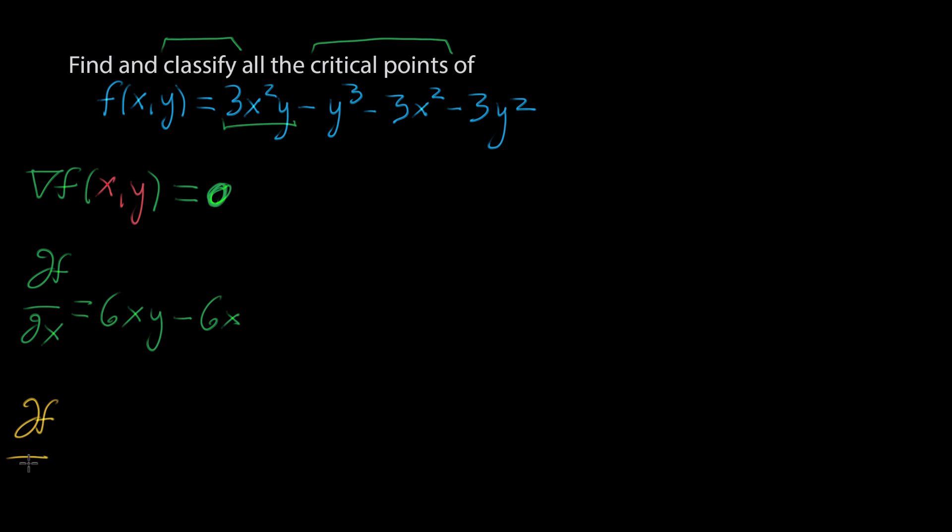For the partial of f with respect to y: this first term looks like some constant 3x² times y, so the whole thing looks like 3x². The second term, minus y³, looks like minus 3y² when we take the derivative.